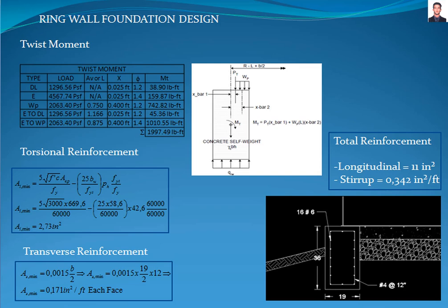The minimum torsional reinforcement per ACI 318 will be used. The equations in section 9.6.4.3 allow us to calculate the minimum longitudinal reinforcement required by torsional moment, where ACP is the area enclosed by the outside perimeter of the closed section, PH is the perimeter of the centerline of the outermost closed transverse torsional reinforcement, FYT is the yield strength of the transverse reinforcement, and FY is the yield strength of the longitudinal reinforcement, giving a result of 2.73 square inches.